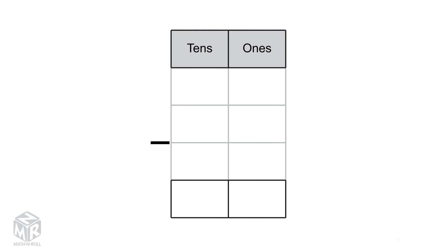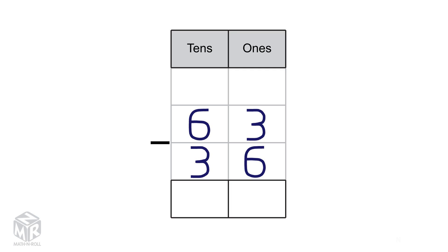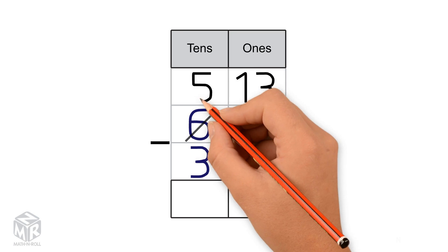Let's try another example: 63 minus 36. Pause this video and try to solve it on your own. We can't subtract 6 from 3, so we regroup one 10 as 10 1s. Now we have 13 1s, so we cross out the 3 and put 13 at the top. Now we have 5 10s, so we cross out the 6 and put 5 at the top.